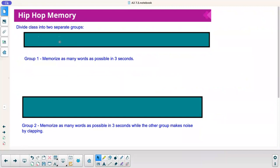Here's what's going to happen here. If you were in class, we would divide the class into two separate groups. I would say, okay, left side of the classroom, you're group one. Right side of the classroom, you're group two. And what I would do is I'd say, okay, group one, I'm going to delete this box. And you have to memorize as many words as you can in three seconds. Ready, set, go.